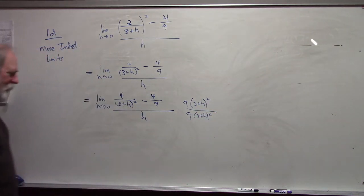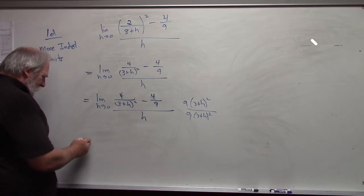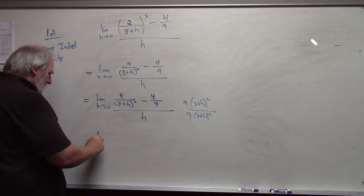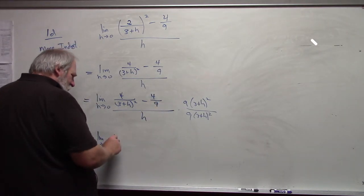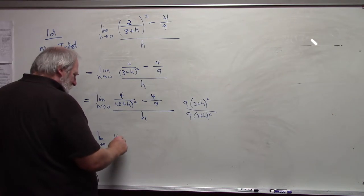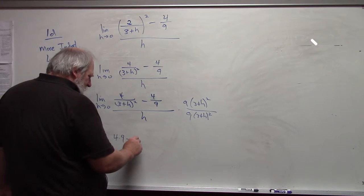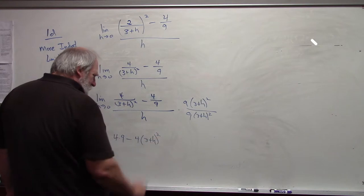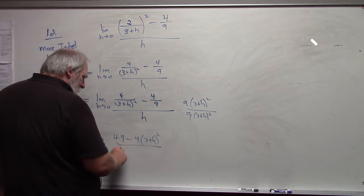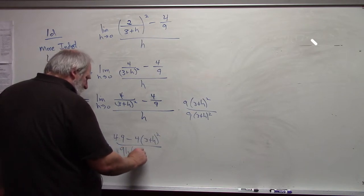It may have been a while since you have seen some of this algebra, so I'm kind of going through this. It's part of the reason why we are doing the example. Limit h approaches 0 of when I distribute this through, I get 4 times 9 minus, when I distribute here, I get 4 times 3 plus h quantity squared all over 9h times 3 plus h quantity squared.